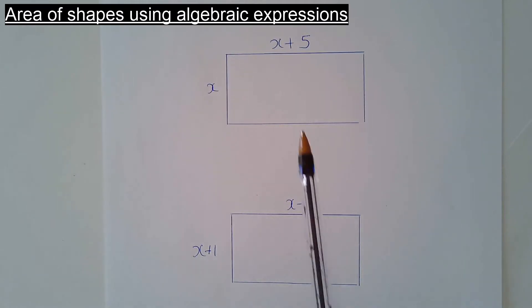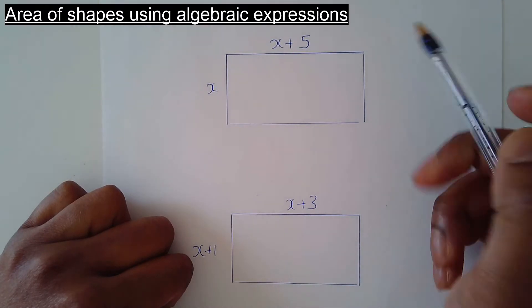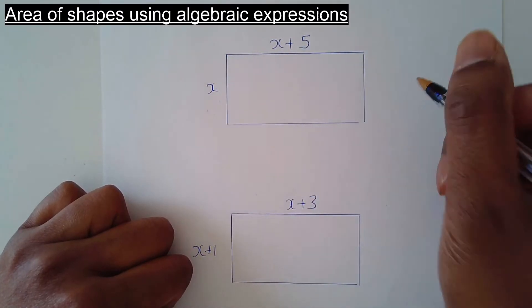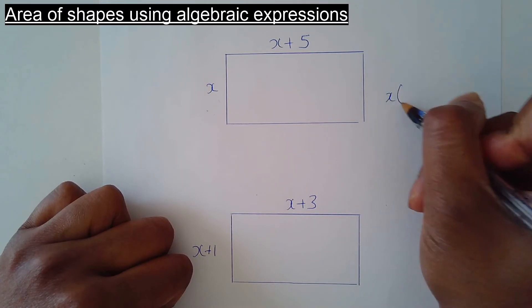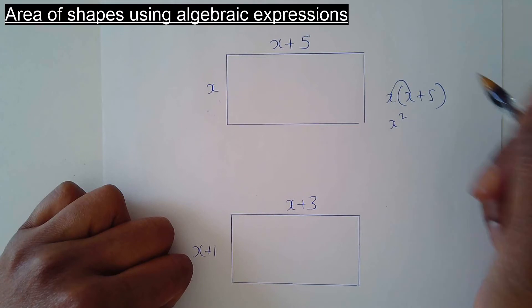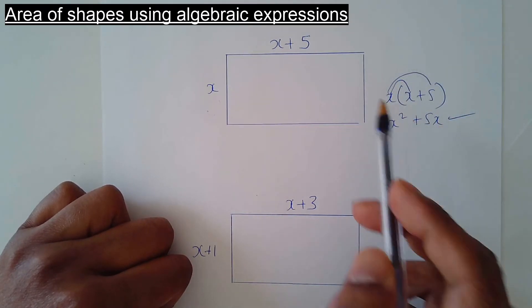To find the area of a rectangle using algebraic expressions, it's just length times width. You're just multiplying the two sides. x times x is x squared, x times 5 is 5x. That's the area of this shape.